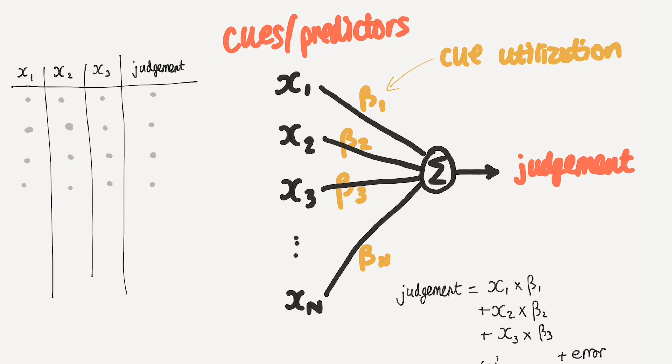Conversely, you could have a negative cue-utilization beta coefficient. And that would mean, I believe that this predictor is relevant and important in coming up with the judgment. But I also know that actually the predictor is negatively correlated with my judgment, for example.